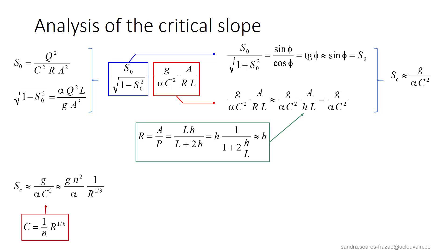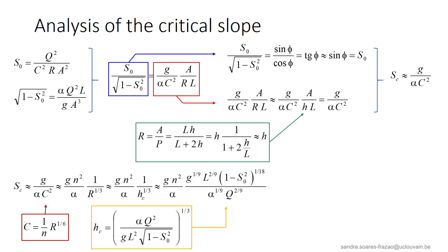This relation can also be expressed in terms of the Manning roughness coefficient instead of the Chezy coefficient. The hydraulic radius is replaced by the depth, thus by the critical depth. The critical depth for a rectangular cross-section is substituted in, leading to a final expression showing that the critical slope depends mainly on the roughness and secondarily on the discharge per unit width, which corresponds to what we observed in the example. However, this expression is only valid for very wide sections, much wider than common ones, so it is useful for analysis but not for practical calculations.